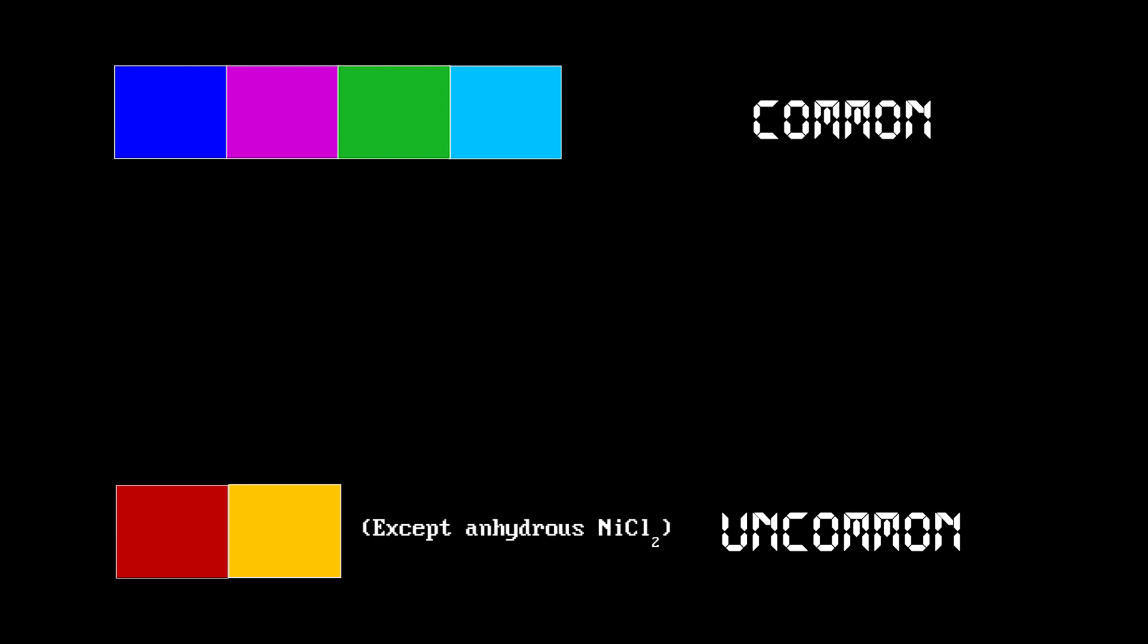Rarer instances of nickel compounds have a vibrant red color, one such example being nickel's complex with dimethylglyoxine. Only very rarely do you come across nickel compounds with a yellow or orange color. Now, for the synthesis.